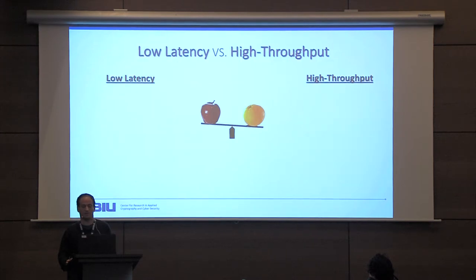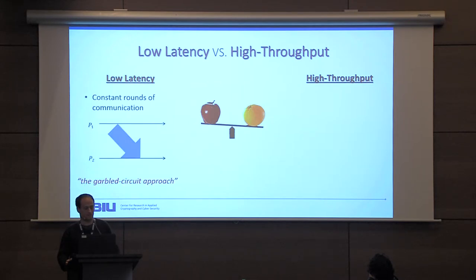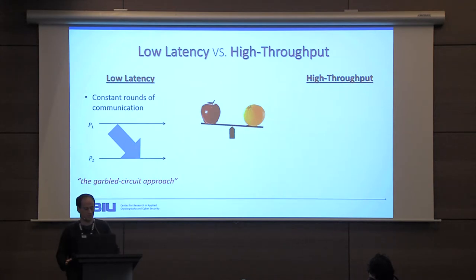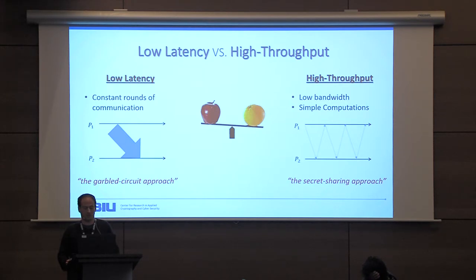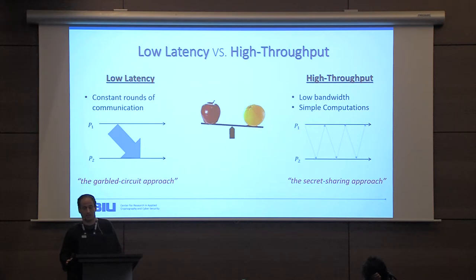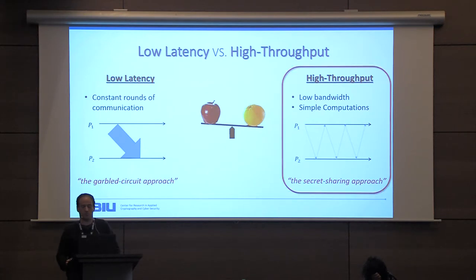These are not just different ways to measure a protocol but also different design goals. To achieve low latency we would like constant rounds of communication, using what we call the global circuit approach — sending large amounts of data in very few rounds. On the other hand, to achieve high throughput we care less about rounds and more about low bandwidth and simple computations, because parties can pipeline computations and start the next one while waiting for messages. We use the secret sharing approach for this.